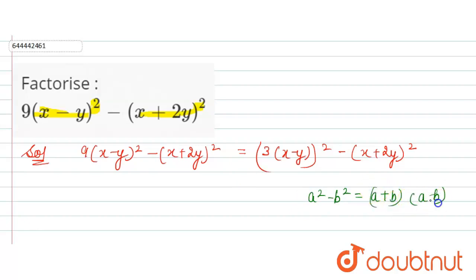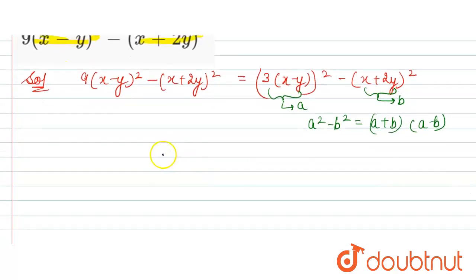So here our a is 3(x - y) and our b is (x + 2y). So a + b is 3(x - y) + (x + 2y), and a - b is 3(x - y) - (x + 2y).